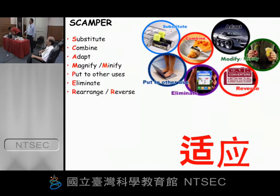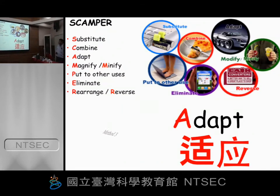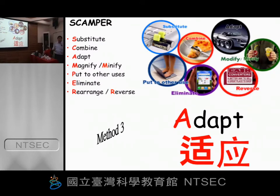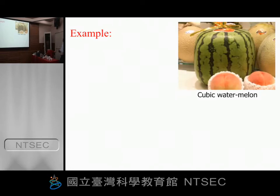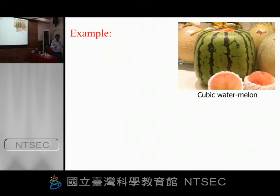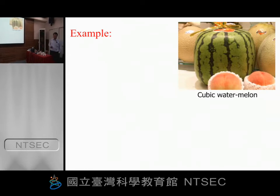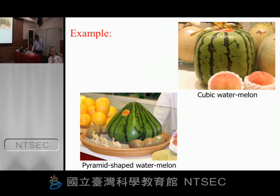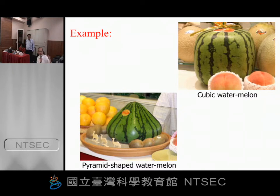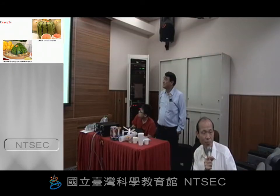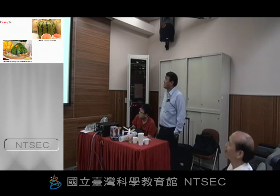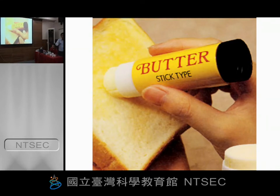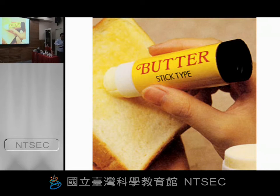Next one: in order to sell more fruit — watermelon. Normally you have a round watermelon, but if you want to transport more, you make it square-shaped so more can fit in the car. And if you want to sell it in Egypt, you can make it in the shape of a pyramid.